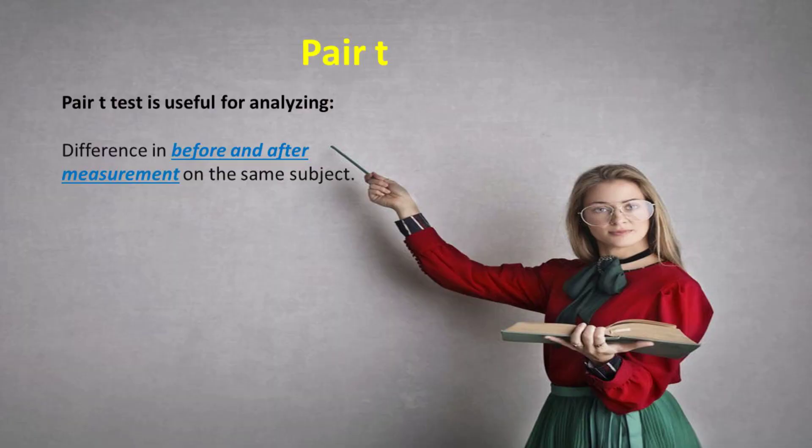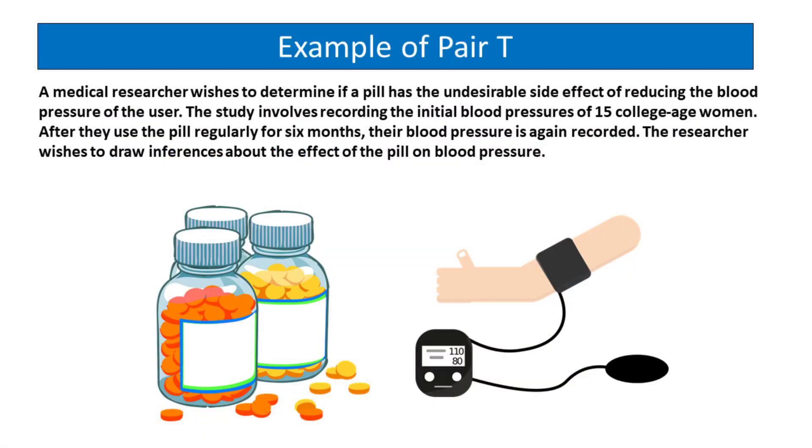Pair t-test is useful for analyzing differences in before and after measurement on the same subject. For example, a medical researcher wishes to determine if a pill has the undesirable side effect of reducing the blood pressure of the user. The study involves recording the initial blood pressures of 15 college-age women. After they use the pill regularly for six months, their blood pressure is again recorded. The researcher wishes to draw inferences about the effect of the pill on blood pressure.